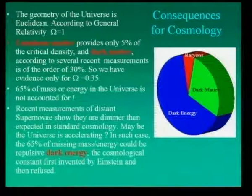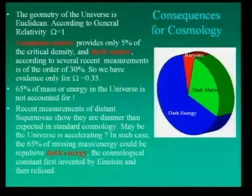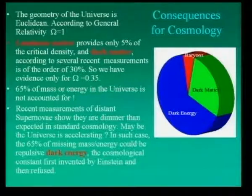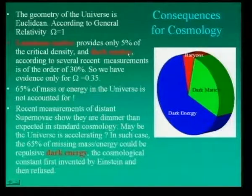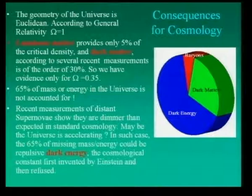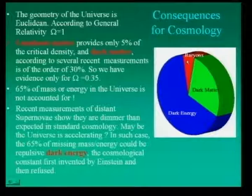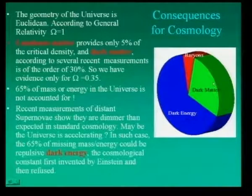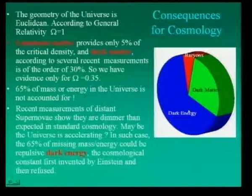The consequences for cosmology are: the geometry of the universe is Euclidean, so omega equals 1 and the density of the universe is the critical density. Since luminous matter provides only 5% of the density and dark matter provides maybe 30%, we have something missing. This missing mass-energy could be dark energy, necessary to explain supernova observations. So we have a strange composition: normal matter about 5%, dark matter — never measured in the lab — about 30%, and dark energy — never measured in the lab and we don't know what it is — about 65%.